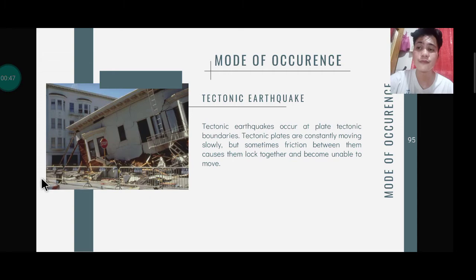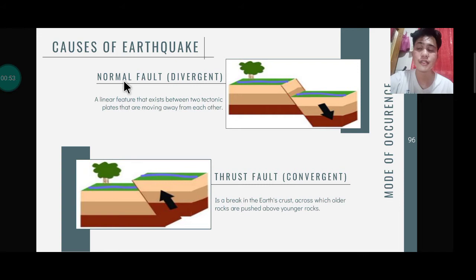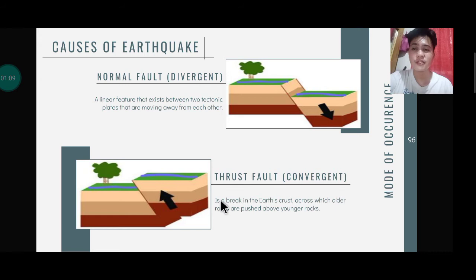These are the causes of earthquakes. First is the normal fault, or the divergent — a linear feature that exists between two tectonic plates that are moving away from each other. As you can see, the hanging wall moves in a downward direction.